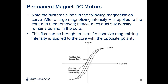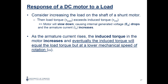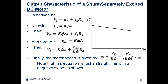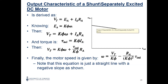We discussed the hysteresis loop and what happens when you load your DC motor with extra load. At the end, you reach a lower speed and higher torque. We discussed the torque-speed characteristic: when you add more load to the motor, your speed decreases, which makes sense — more mechanical load means reduced speed.